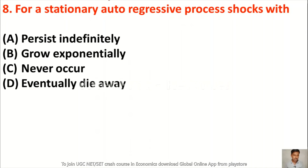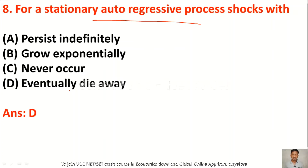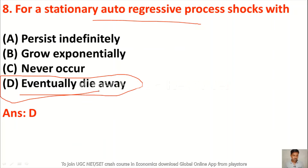Question 8: For a stationary autoregressive process, shocks — option A persist independently, option B grow exponentially, option C never occur, option D eventually die away. For a stationary autoregressive process, shocks eventually die away, so option D is correct.